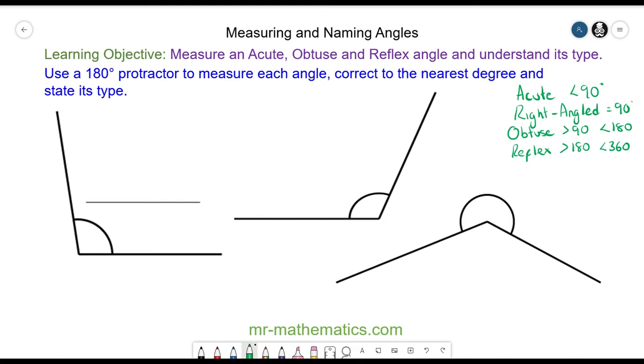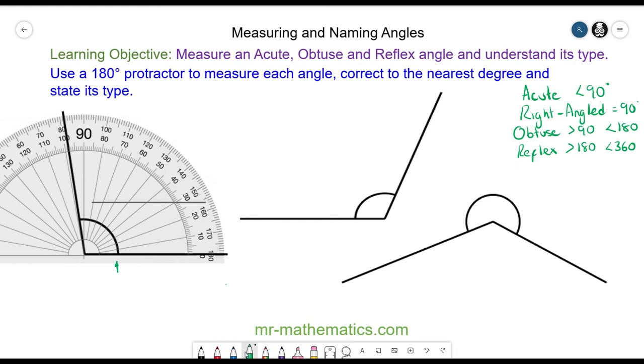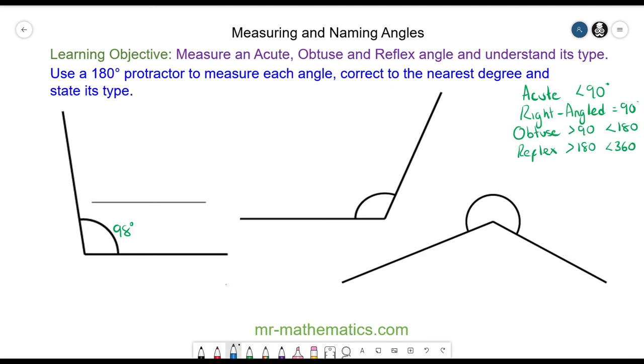Okay, so we will begin with this question. So we have lined up our protractor so the crosshairs are on the intersection of the two lines. We are going to go in an anti-clockwise direction using the lower scale, and we go to 90 to 95 to 96 to 97 to 98 degrees. And because it is greater than 90 but less than 180 it is called obtuse.